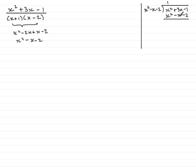I subtract to get the remainder. We have x squared minus x squared is 0, and 3x minus minus x gives 4x, and then minus 1 minus minus 2 gives plus 1.